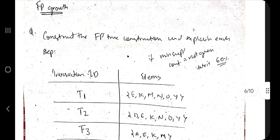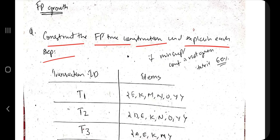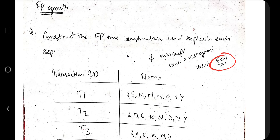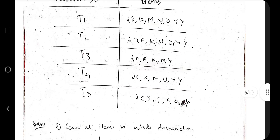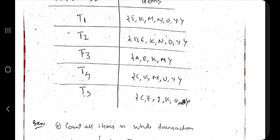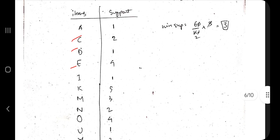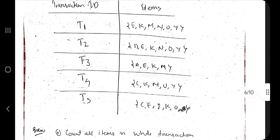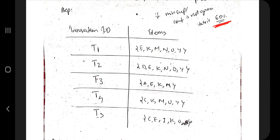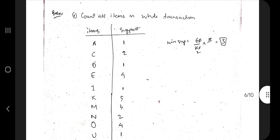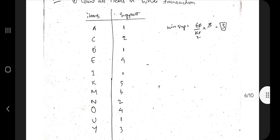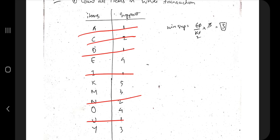Now for FP-Growth. The question type is: construct an FP-tree and explain each step. If minimum support is not given, take it as 60%. First, apply the A-Priori step: list all unique items, count their frequencies, then compute the minimum count — for example, with 5 transactions and 60%, the minimum count is 3. Eliminate all items appearing fewer than 3 times.